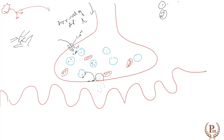So to recap: the first step is arrival of the action potential; the second is opening of voltage-gated calcium ion channels and influx of calcium ions. The third step is release of the neurotransmitters into the synaptic cleft by the process of exocytosis.